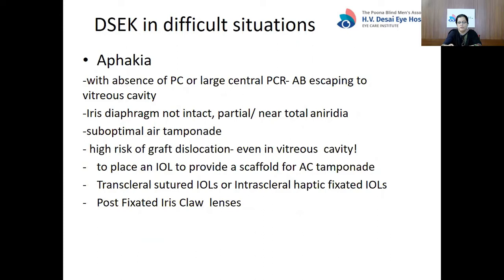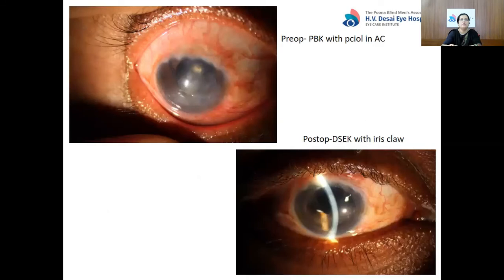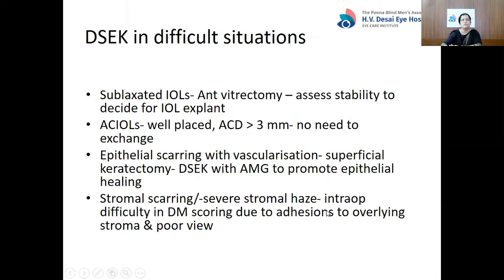Placing an IOL is recommended in this situation because it will provide a scaffold for the air tamponade. The preferred IOLs are trans-scleral sutured IOLs or intrascleral haptic-fixated IOLs. If the iris diaphragm is intact, posterior-fixated iris-claw lenses also do equally well. This is a case operated at our hospital — a PBK with PCIOL placed in the AC — where DSEK with IOL explant and iris-claw lens placement was done. Subluxated IOLs with vitreous in the AC is another difficult situation: anterior vitrectomy is done, stability of the IOL is decided, and a decision whether to keep the same IOL or to explant and replace is taken. AC IOLs, if well placed with anterior chamber depth more than 3 mm, do not need to be exchanged.